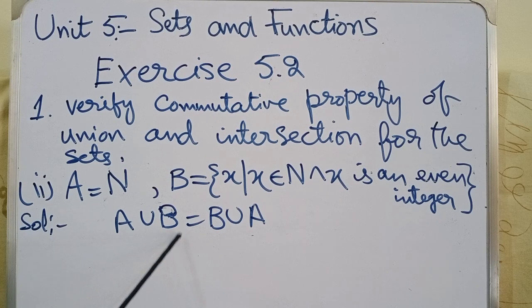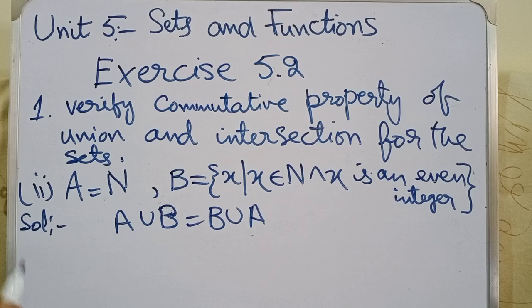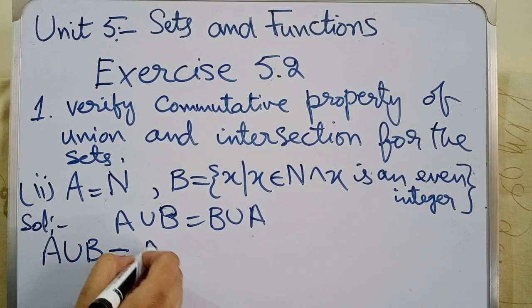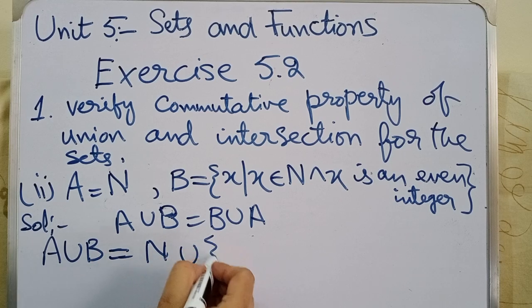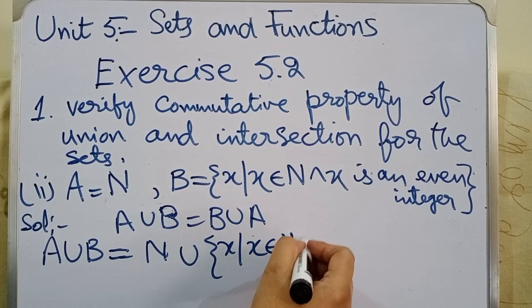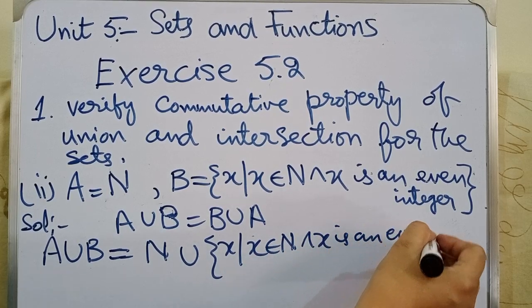We have to prove A union B equals B union A. So we first take A union B. Set A is N union set B is x such that x belongs to N and x is an even integer.